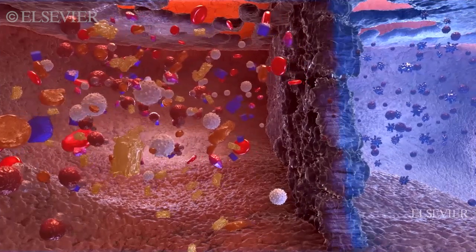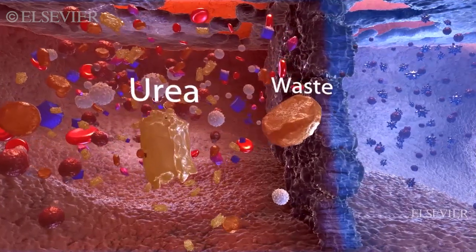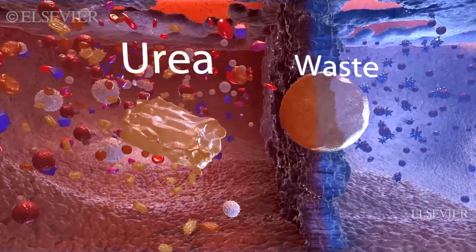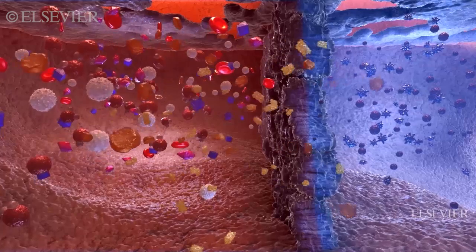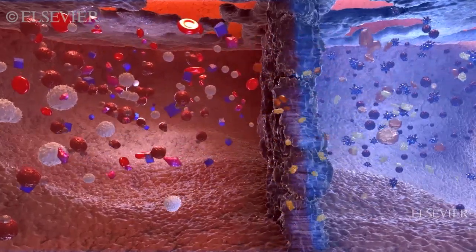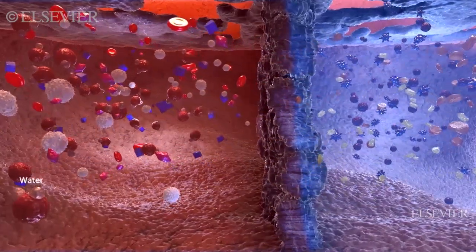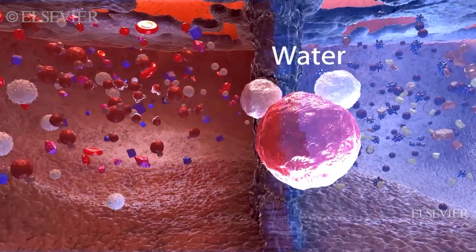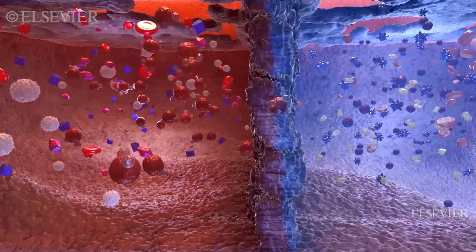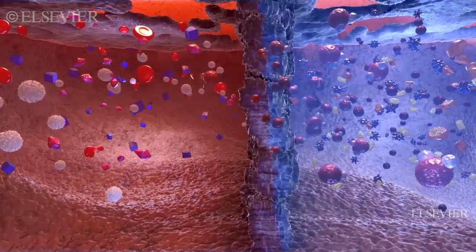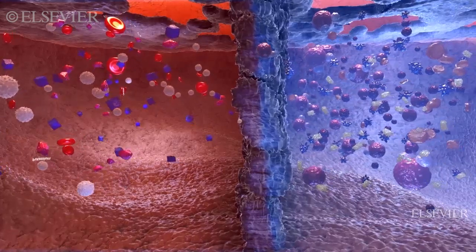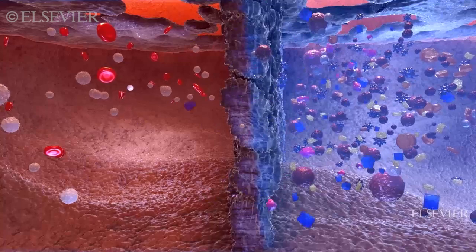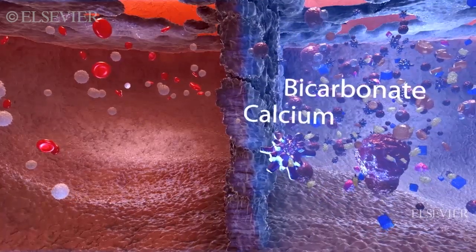This semi-permeable membrane lets urea and other wastes move from the blood into the dialysate by diffusion, because of the difference in their concentrations. The membrane also allows excess water and electrolytes to move in either direction as needed through osmosis, because of differences in their osmolarities. For example, sodium and potassium usually move out of the blood, and calcium and bicarbonate usually move into it.